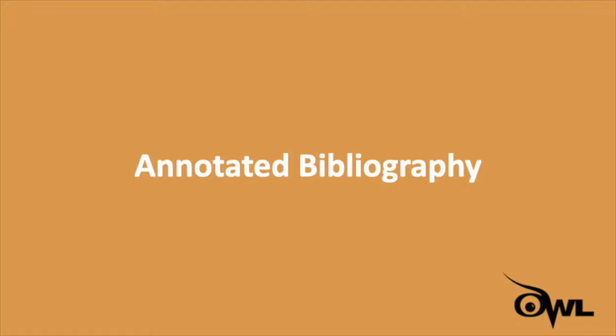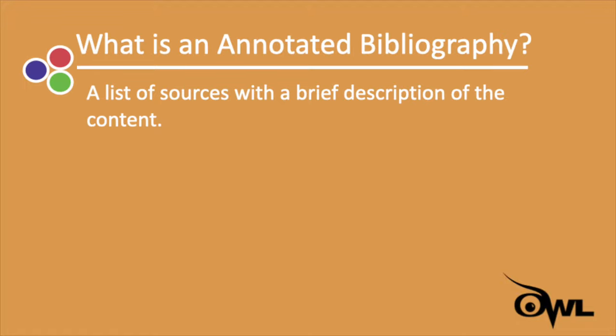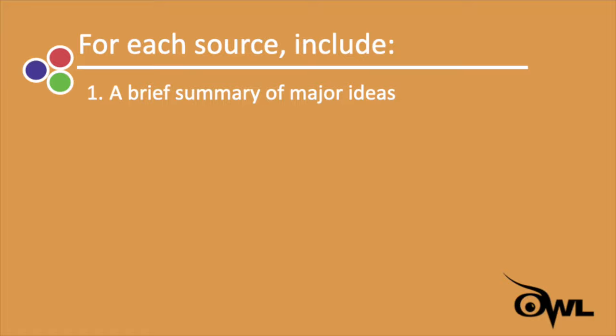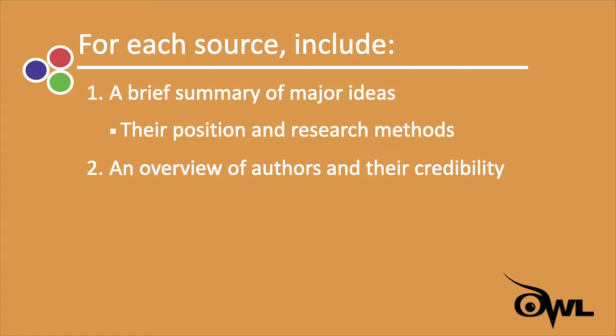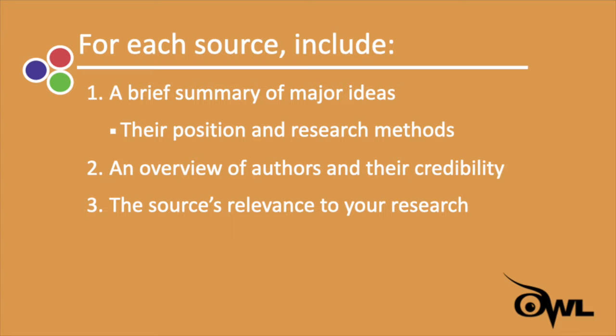The annotated bibliography. Don't let the fancy name scare you. Essentially, an annotated bibliography is just a list of sources, each followed by a brief description of the content. I like to think of it as an encyclopedia, or a dictionary with bite-sized entries for all the sources you're using in your own research. You compile relevant information for each source, including a brief summary of the major ideas, their positions, and any research methods they use. You can also include an overview of the authors and their credibility, and even a little bit about the source's relevance to your research project.